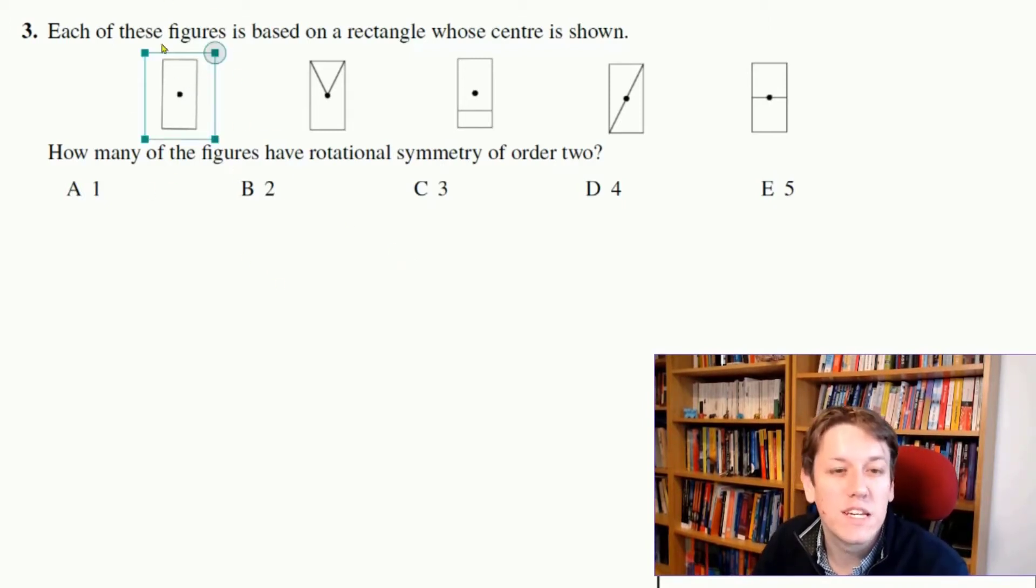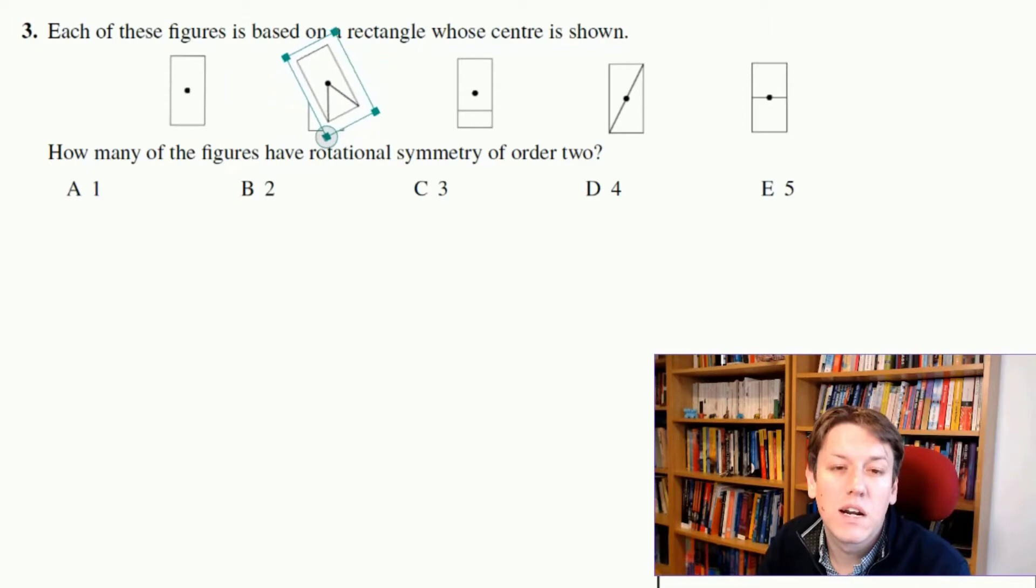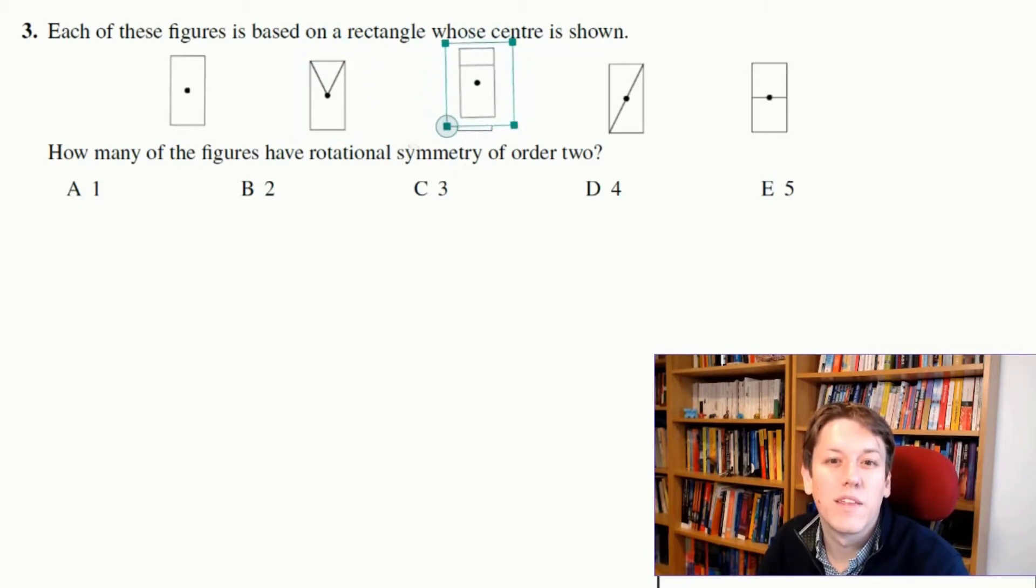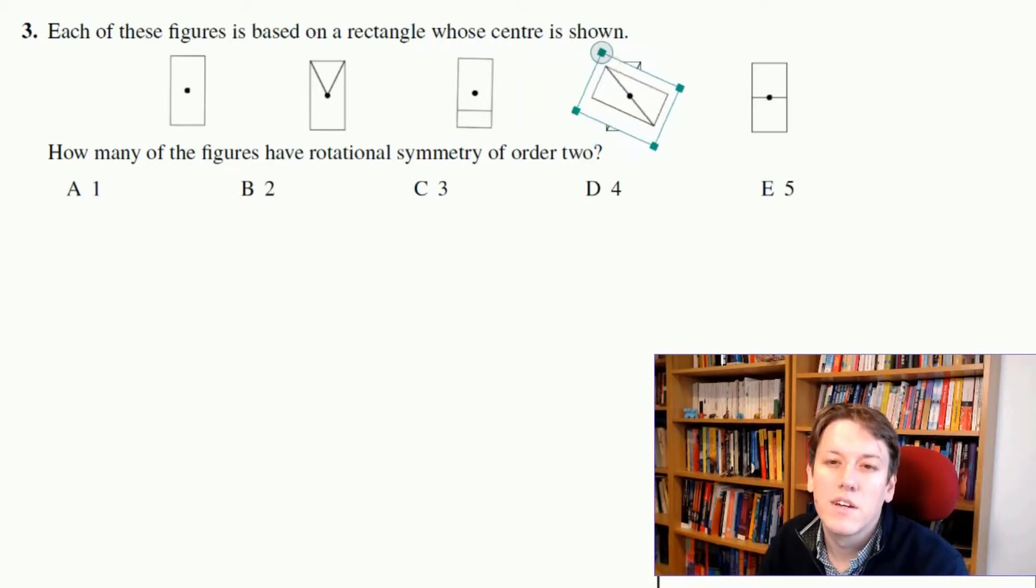Now I've set up the page here so I can just rotate them. So on the first one here, you see if I rotate this, when I go halfway around, it looks exactly the same. So that one does have rotational symmetry of order 2. In the second one, if I go around when it's halfway, these lines are at the bottom rather than the top, so that one doesn't have rotational symmetry of order 2. For this one, again, if I rotate it, that bottom line there is going to end up at the top instead of the bottom.